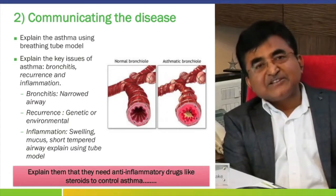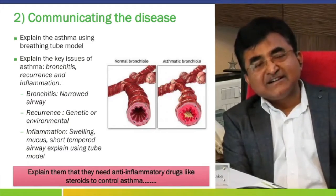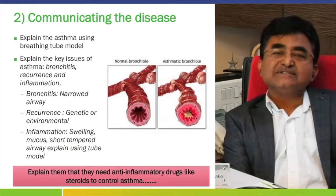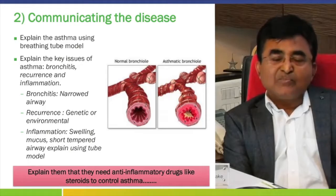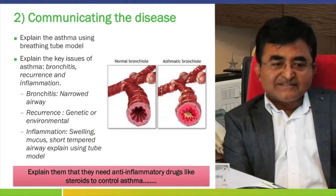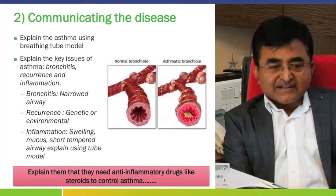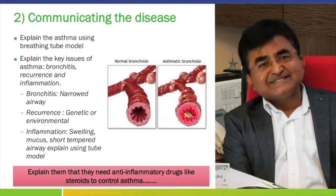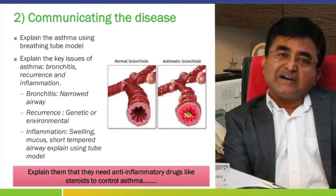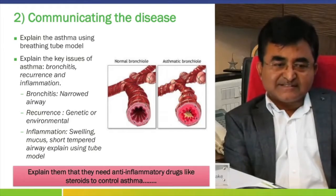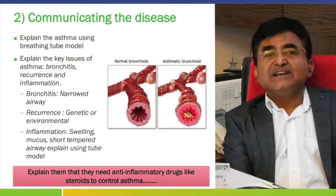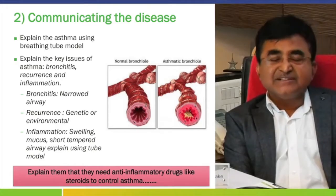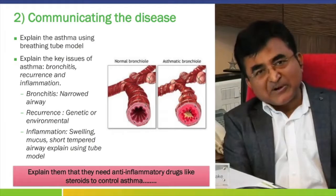You should be able to explain what is bronchitis, what is airway hypersensitivity, and what happens in inflammation. Bronchitis is the narrowing of the airways, and recurrence occurs because of genetic or environmental factors. Inflammation causes swelling, mucus, and a short-tempered airway. Explain these things using models.